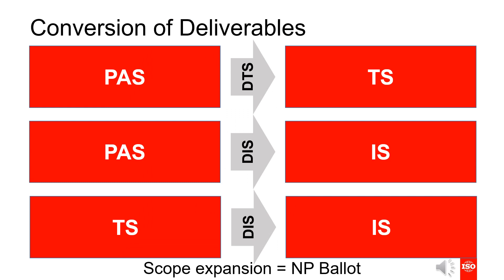Conversion of deliverables from one type to another is generally possible. A conversion from a PAS to a TS or IS, or a conversion from a TS to an IS, is quite simple. A given committee would usually pass a resolution for the intended deliverable change and start a DIS ballot for a conversion to an IS and a DTS ballot for a conversion to a TS. If the scope of a publication has to be expanded as part of a conversion or upgrade, an NP ballot using Form 4 is required.